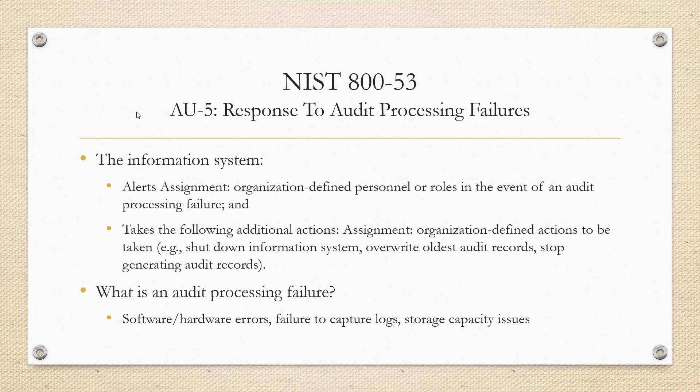So first and foremost, audit control 5 — AU5 — response to audit processing failures. The control description reads: the information system alerts organization-defined personnel or roles in the event of an audit processing failure and takes the following additional actions, which these actions are also defined by the organization.